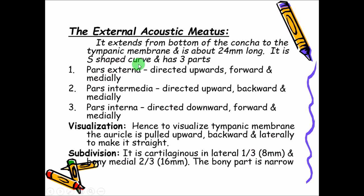The external acoustic meatus has three parts: pars externa, pars intermedia, and pars interna. Pars externa will be directed upwards, forwards, and medially. It is divided into external one-third, middle one-third, and inner one-third. The pars intermedia will be directed upwards, backwards, and medially, and pars interna will be directed downwards, forwards, and medially.